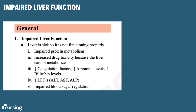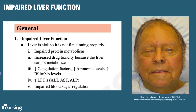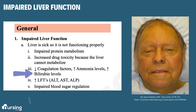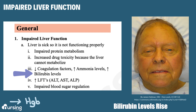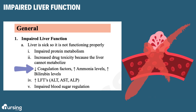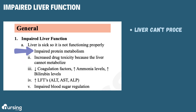Let's review what impaired liver function looks like. The liver is responsible for conjugating bilirubin, which is a byproduct of hemoglobin breakdown. If it can't do that, bilirubin levels will start to rise. We'll also see a decrease in clotting factors because the liver isn't able to make them — the liver normally makes clotting factors — and we'll see impaired protein metabolism.